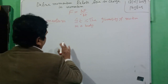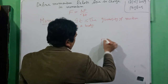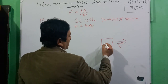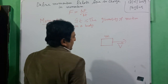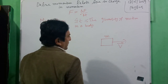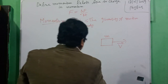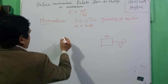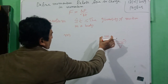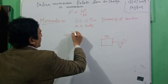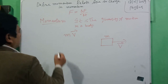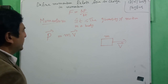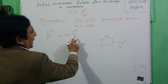When a body is moving with a velocity V and the mass of the body is M, the product of velocity and mass is obtained. When we multiply M and V, we get a quantity called momentum. We simply define that momentum is the product of mass and velocity.